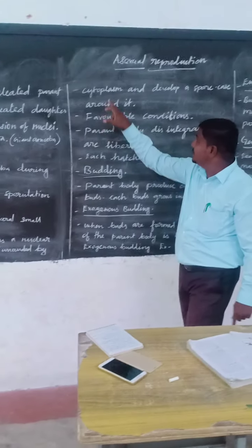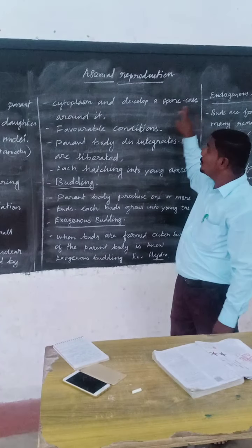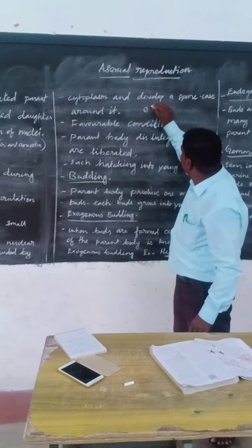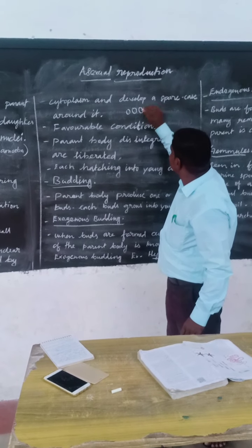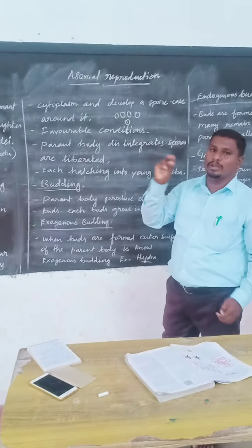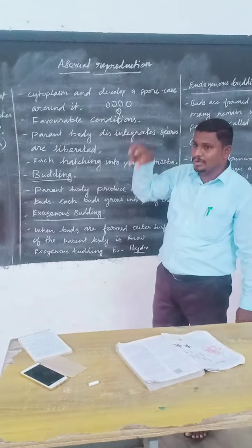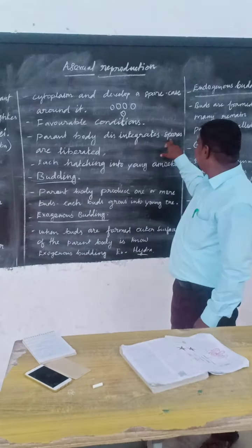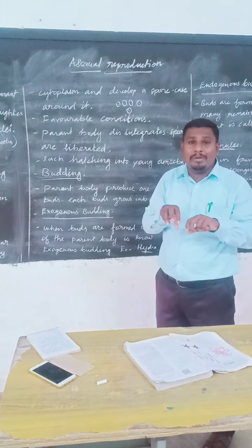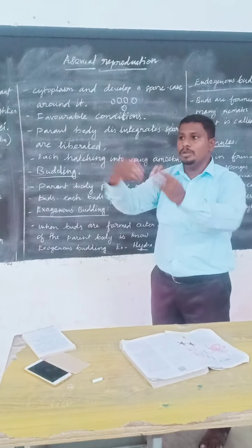Each fragment is developed by a nuclear membrane and became surrounded by cytoplasm. Now we have the cyst. When the parent body disintegrated, the spores are liberated. They are enclosed in a spore case, and only the new normal cells are set free.